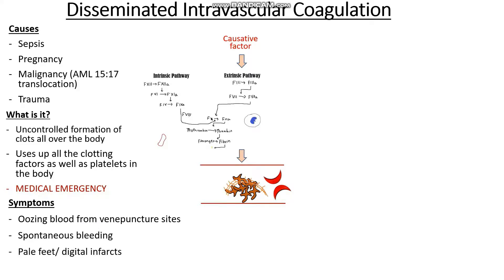If they are at a higher risk of clotting, these clots can get deposited in places like the hands or feet, leading to pale feet or digital infarcts, where one of the digits gets killed off by the clot blocking the arteries. Or we may see things like circulatory collapse, shown by hypotension and tachycardia.